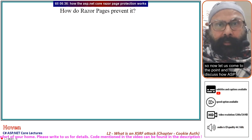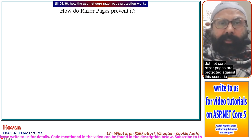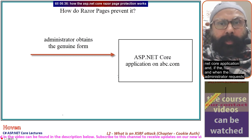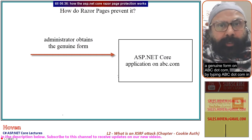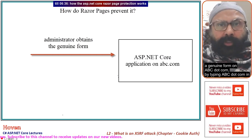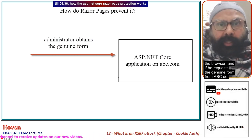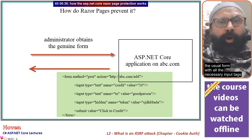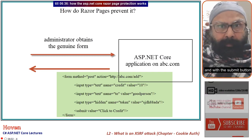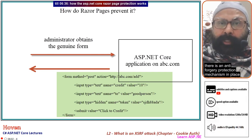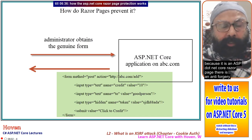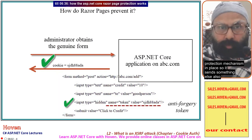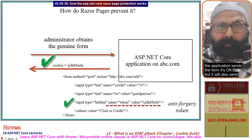Now let us discuss how ASP.NET Core Razor Pages are protected against this scenario. Suppose abc.com were hosted as an ASP.NET Core application. When the administrator requests a genuine form on abc.com, the application sends the usual form with all the necessary input tags and the submit button. There is an anti-forgery protection mechanism in place because it is an ASP.NET Core Razor Page.